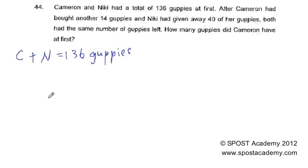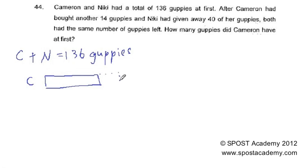Cameron actually bought another 14, so let's draw the model for Cameron. Cameron should have this number of units at first, but she went to buy another 14 guppies. And Nicky gave away 40 of her guppies. After Nicky gave away 40 of her guppies, they both had the same number of guppies left.